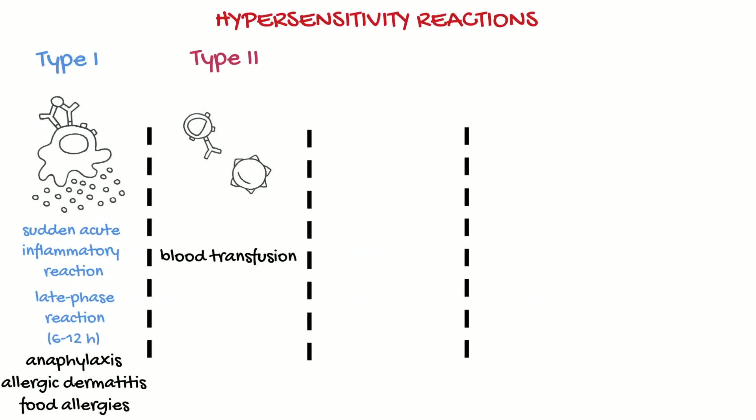If there are no pre-existing antibodies but the cells are still different, then foreign red cells stimulate the production of antibodies and the second transfusion with the same red blood cells will result in their immediate destruction.